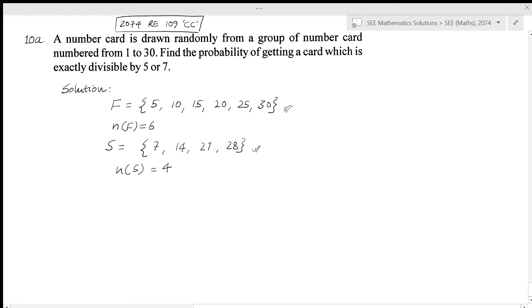So when we choose the card, we either need the numbers from this set or numbers from this set. So we have total 10, right? 6 and 4. So we have total 10 options out of 30 options. There are 30 cards, so we have 10 options out of 30 options.